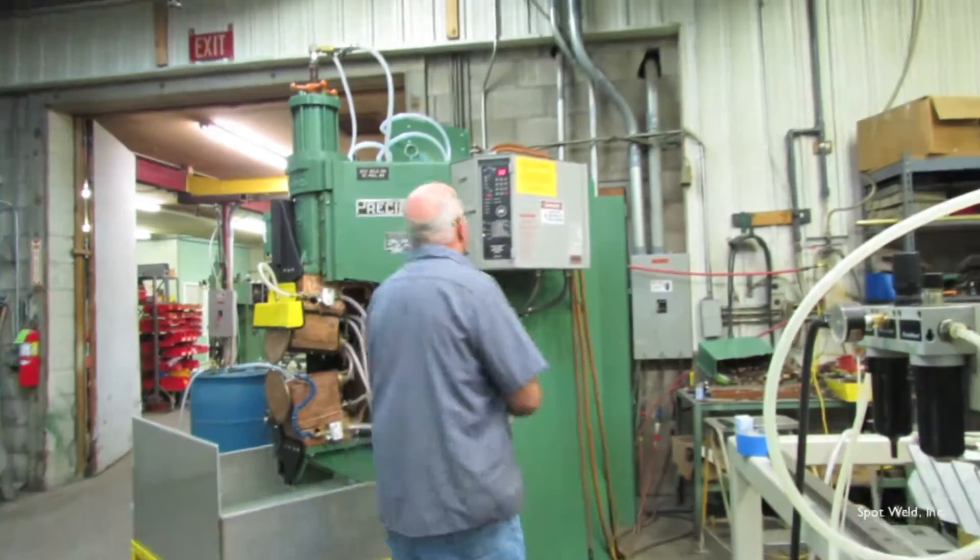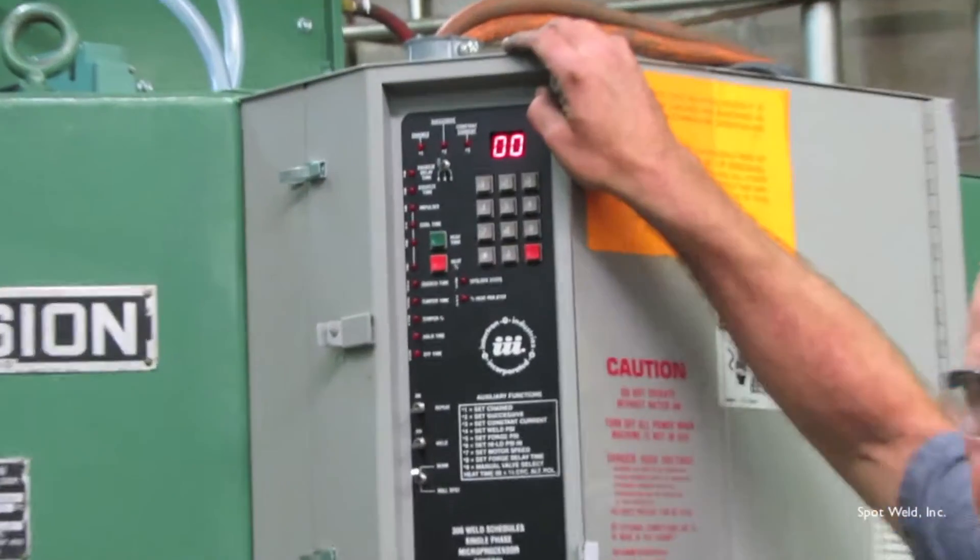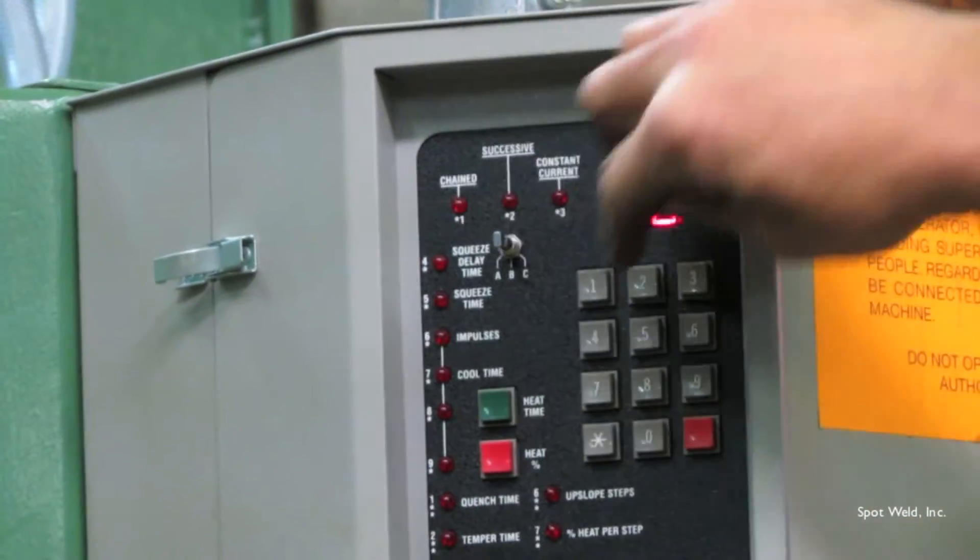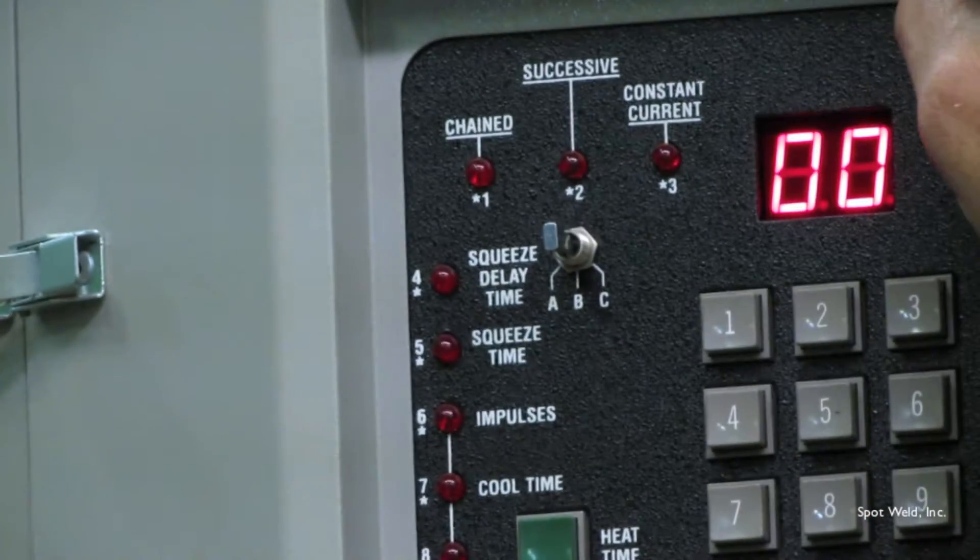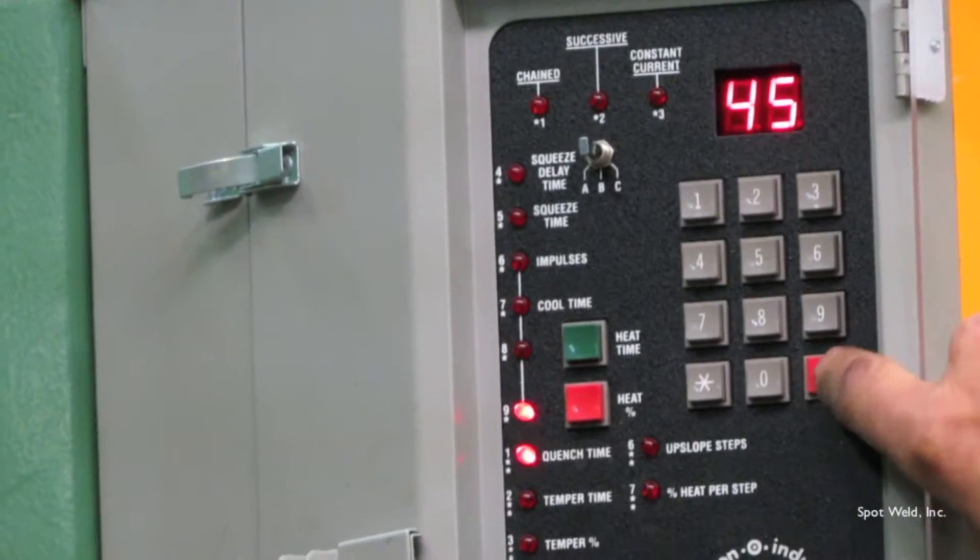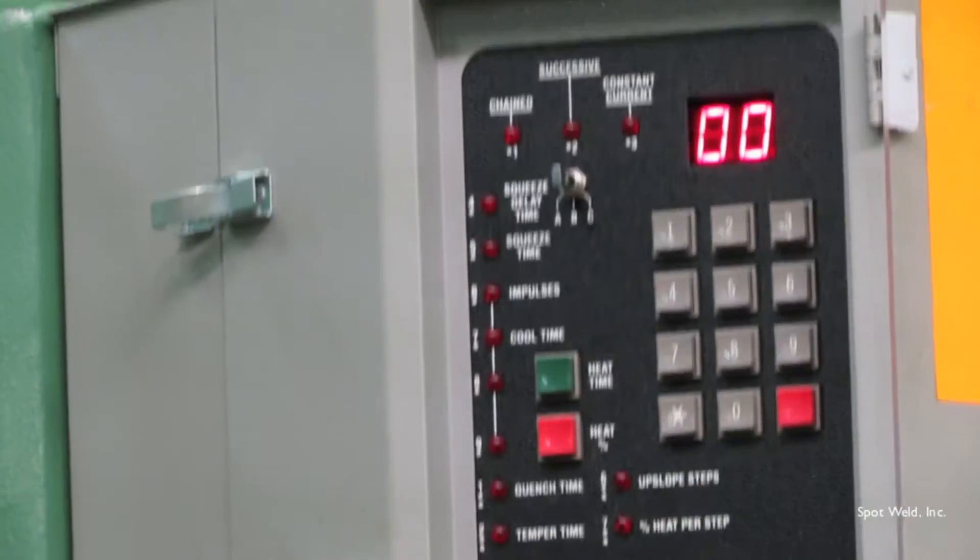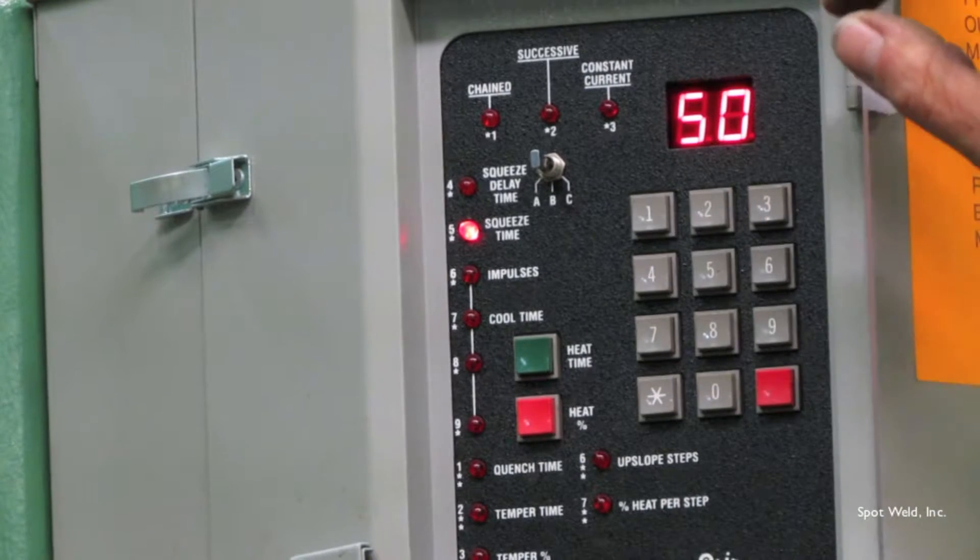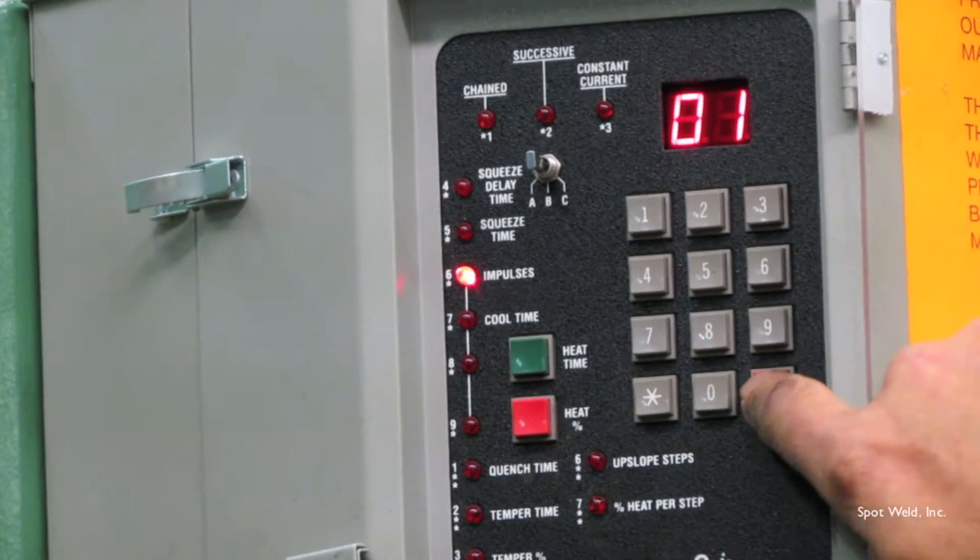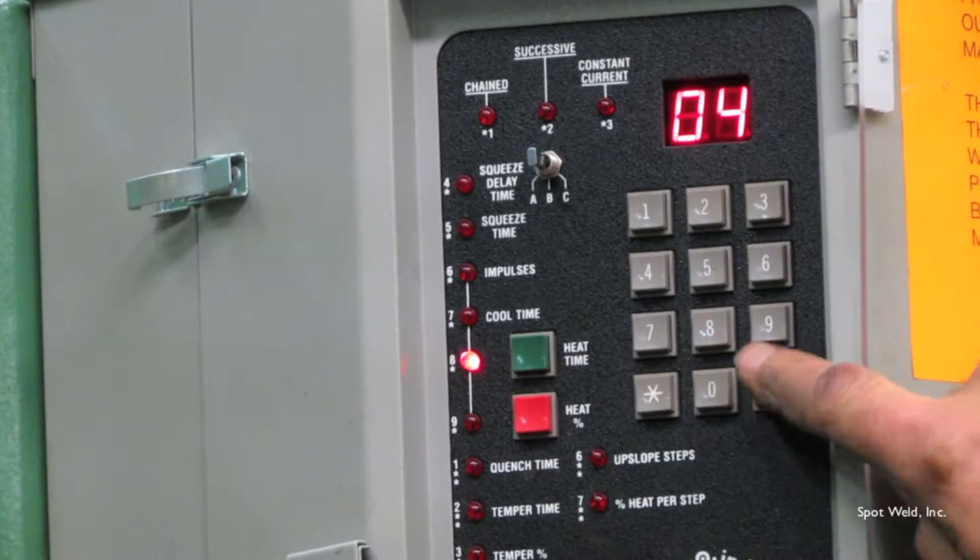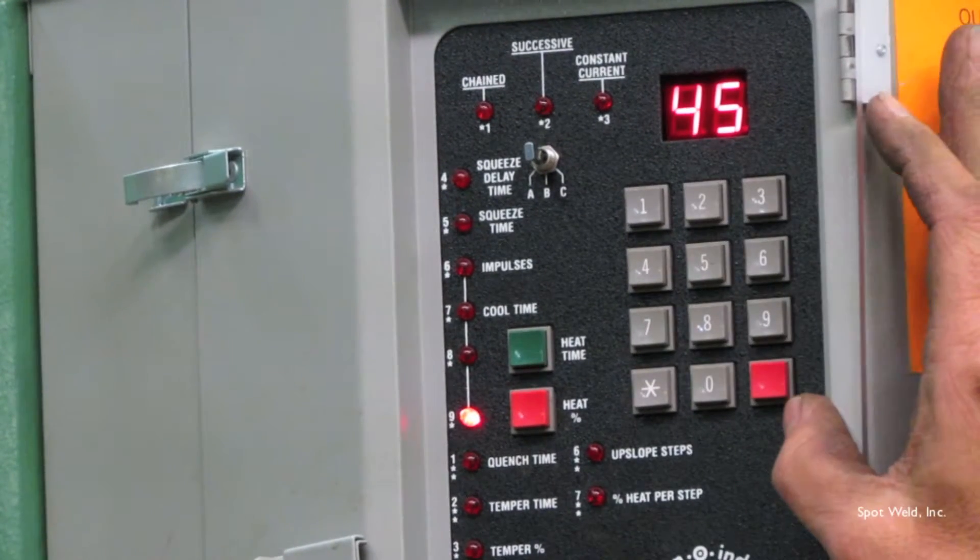Now we're going to dial in a weld schedule. The Intertron 108, we have 100 weld schedules in each A, B and C categories on this toggle switch. Right now we're going to work with schedule zero zero. Squeeze of 50 cycles. Any time parameter on this controller is in cycle time. We only need one impulse. Cool time of 2. Heat time of 4. At 45%. And hold time of 15.